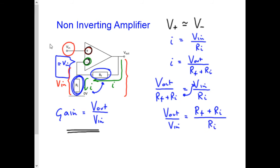and if we now sort out that fraction, we get RF over RI plus RI over RI. And what we should know is that RI divided by RI is just one.